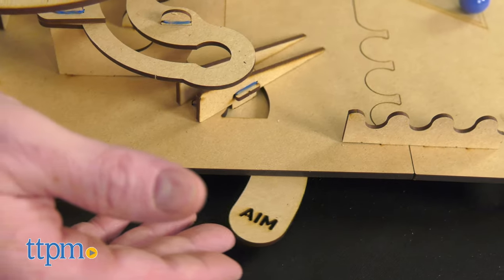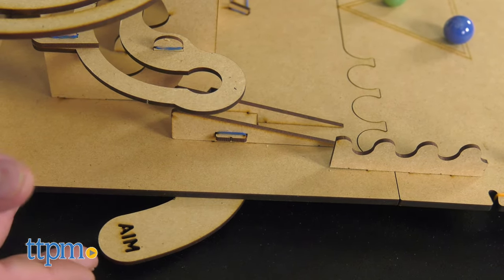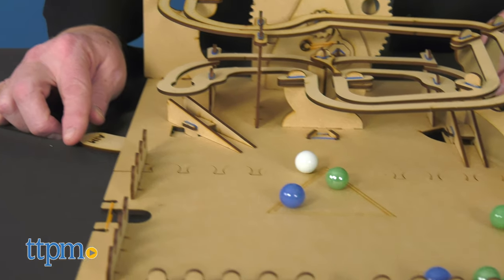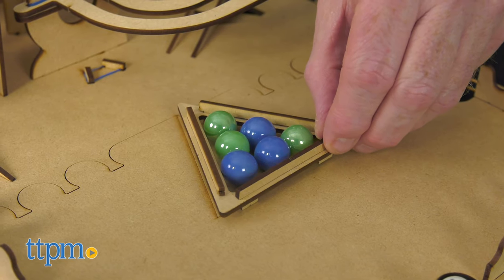Shift the handles for moving ramps to send the marbles in different directions. Place additional marbles in the rack to create a triangle of rolling targets.